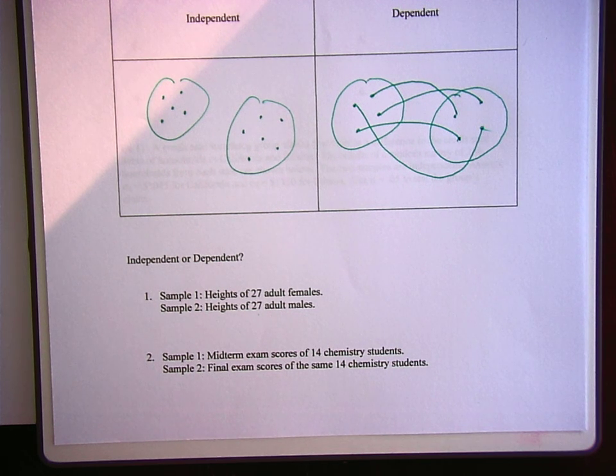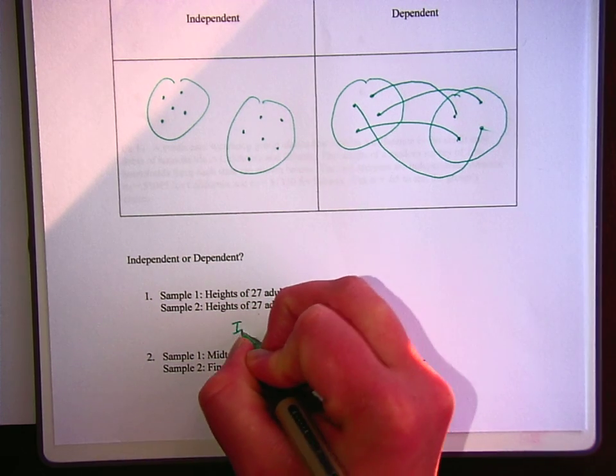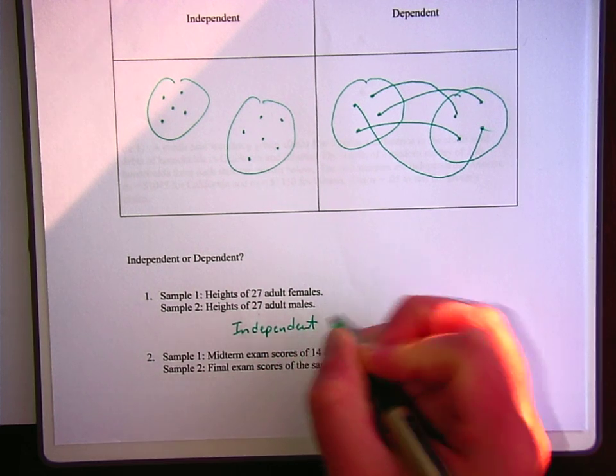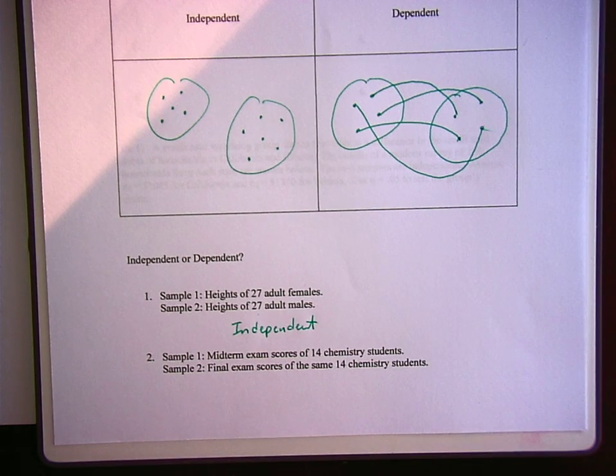Alright, so heights of 27 adult females and heights of 27 adult males. Those are independent because they really have nothing to do with each other. Even though there are exactly 27 in each, which makes you think dependent. If I took one adult female from one group and one adult male from the other group, there's no reason why I would connect them. Now, if I wanted to do a study on like the height difference between people and relationships, then I would have a one-to-one correspondence because I'd have one male for every female or one person for every person. So those would be a one-to-one.